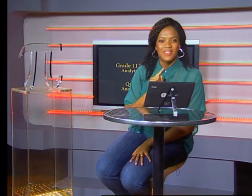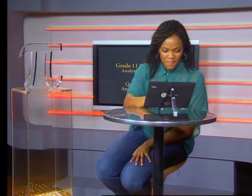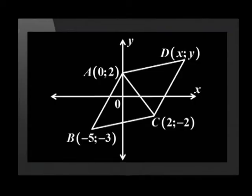Let's do a problem together. ABCD is a parallelogram. Calculate the perimeter of triangle ABC without a calculator. To find the perimeter of any shape we need to add the length of each side. To do this we first need to find the length of each side. Let's calculate the length of AB first.